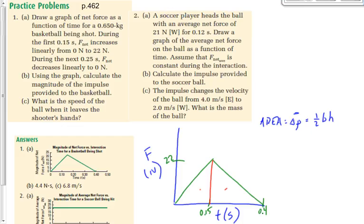That was twice the amount of work needed, but it does get the right answer. One application of one-half base times height is sufficient. The base is 0.4 seconds and the height is 22 newtons, so the answer works out to be 4.4 newton seconds.